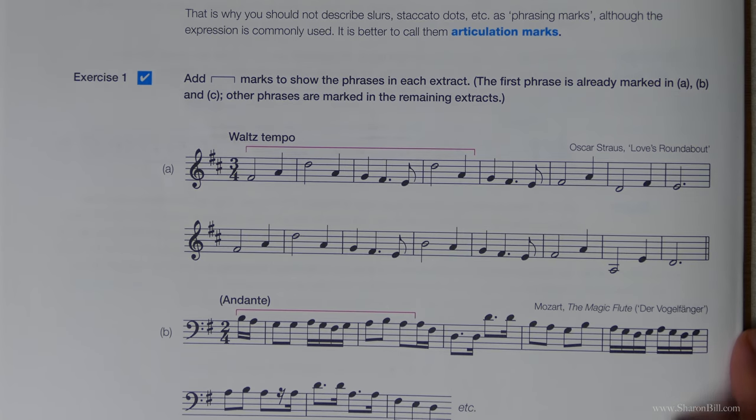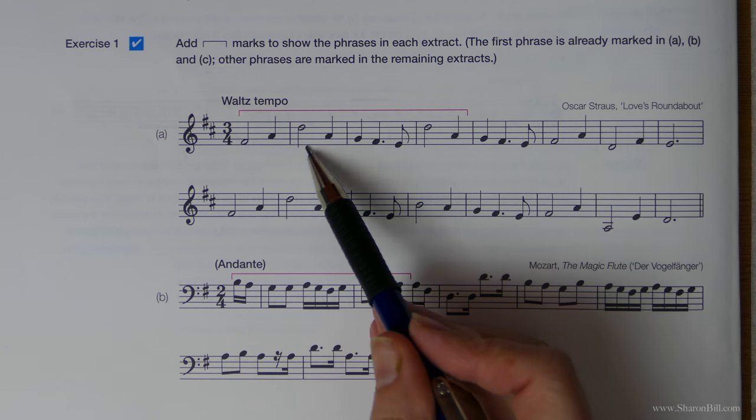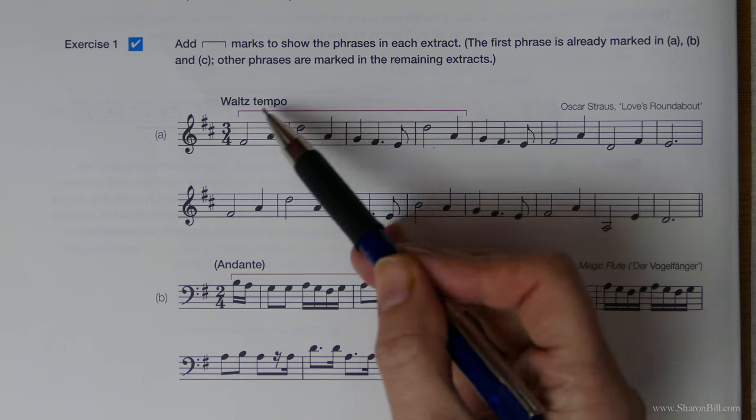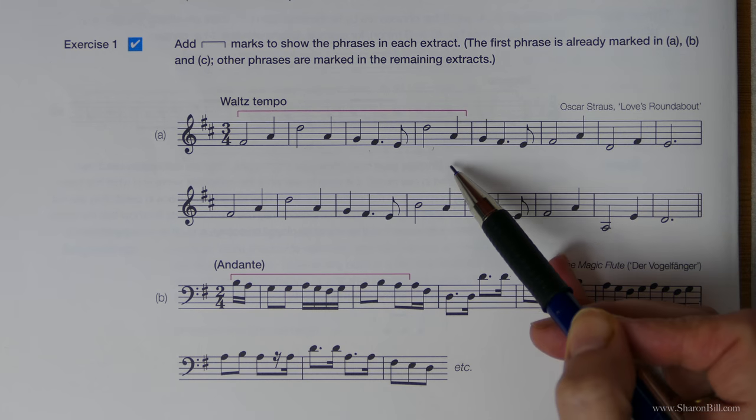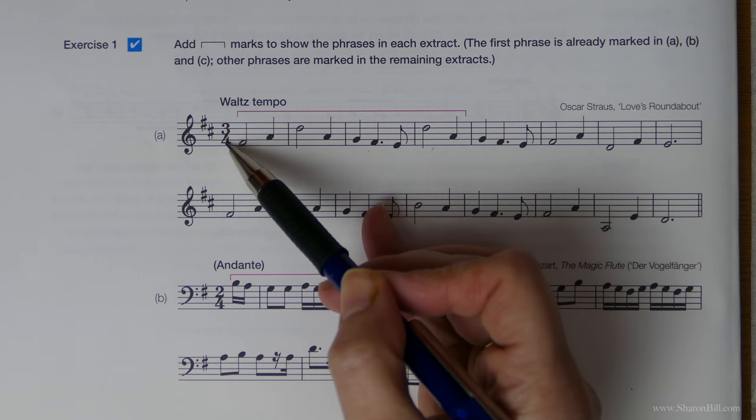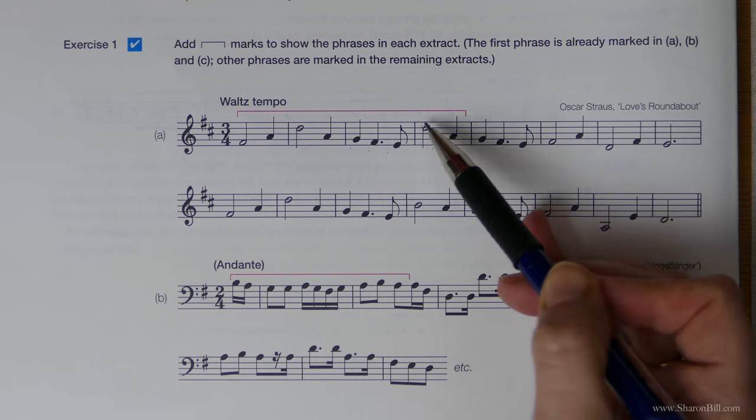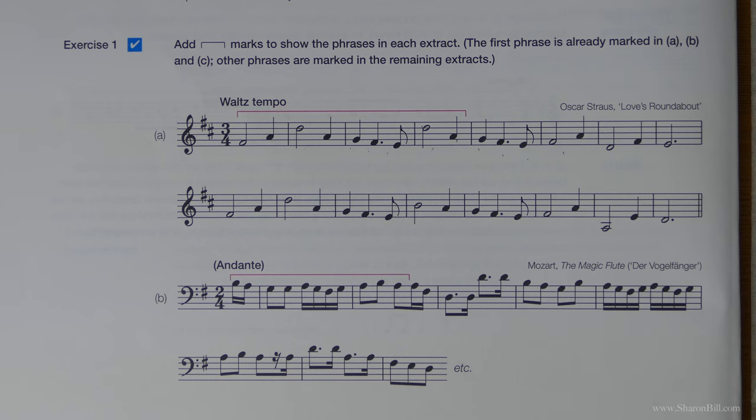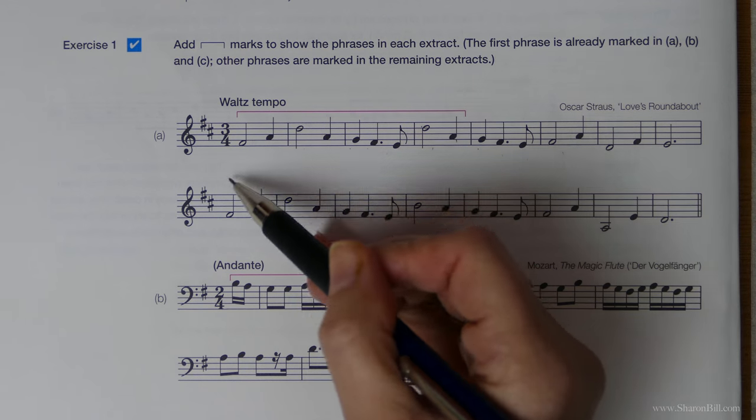So for example, in exercise one, we can see that we have a phrase of one, two, three, four. And it helps if you just hum through the gist of that melody. And you can see, you can work it out just by maths, but at least you can see the flow of the music. You don't have to sing it perfectly as I've just adequately demonstrated. But you can see that it forms a four bar phrase.